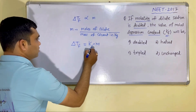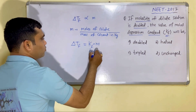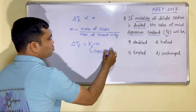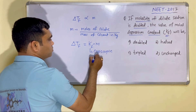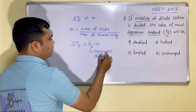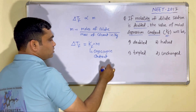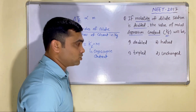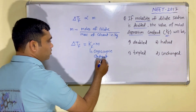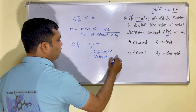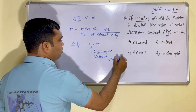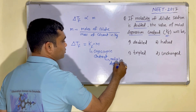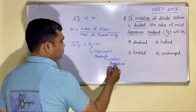This Kf is also known as the cryoscopic constant. The cryoscopic constant is nothing but the molar depression constant, also known as the molar depression constant.